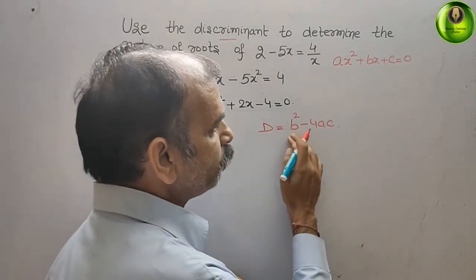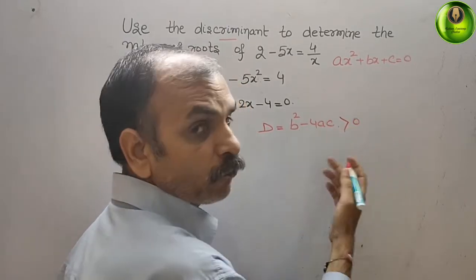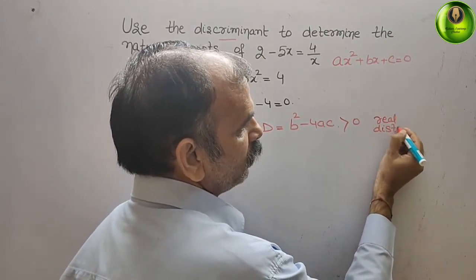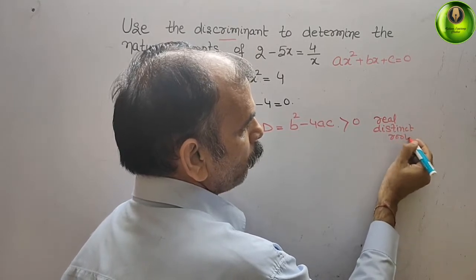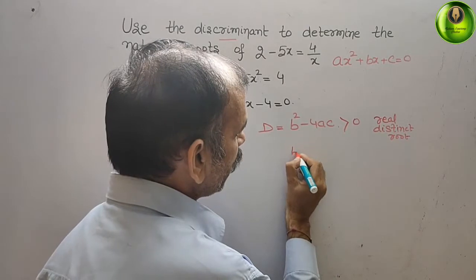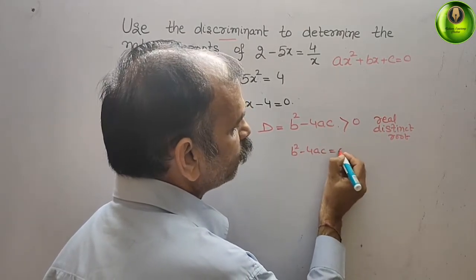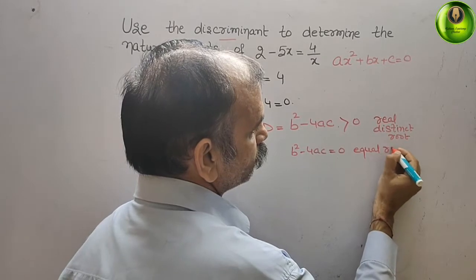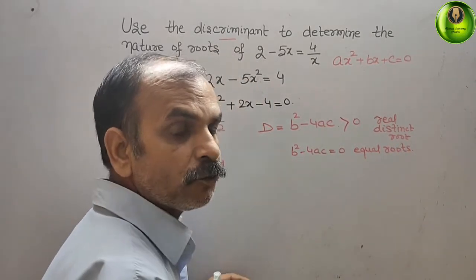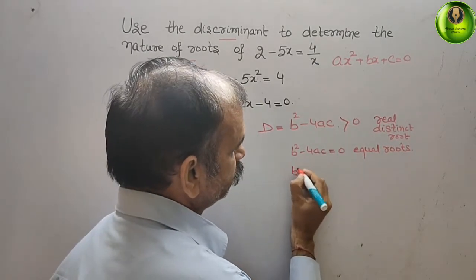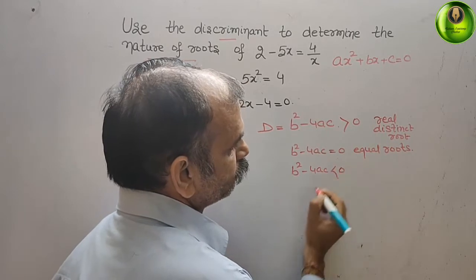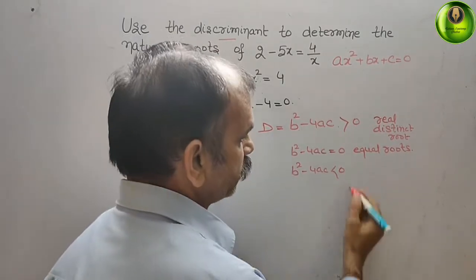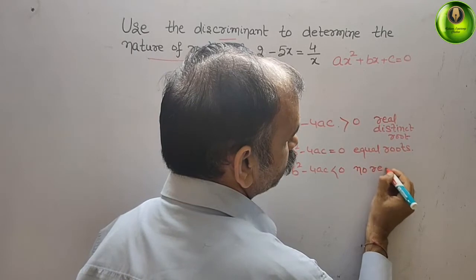We know that if b squared minus 4ac is greater than 0, we get real roots. If b squared minus 4ac is equal to 0, we get equal roots. If b squared minus 4ac is less than 0, we get no real roots, or imaginary roots.